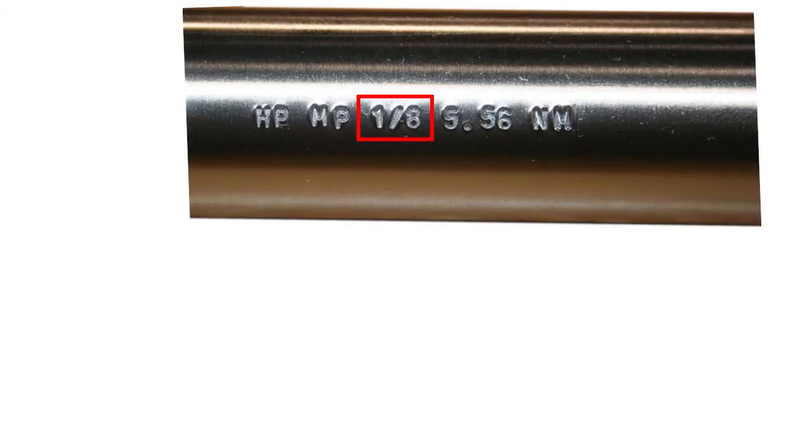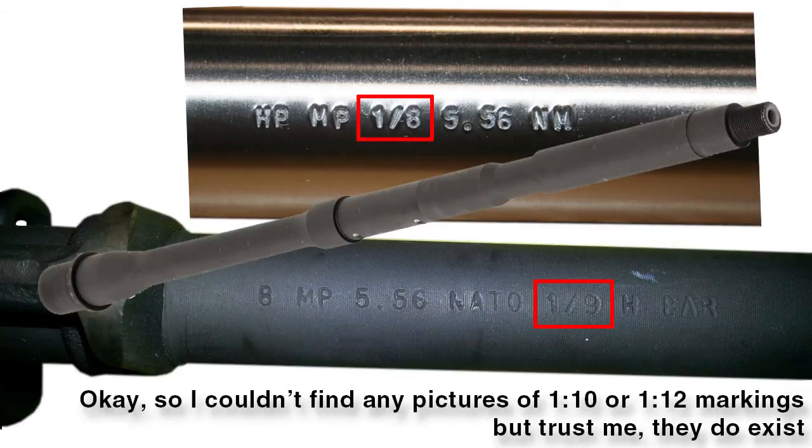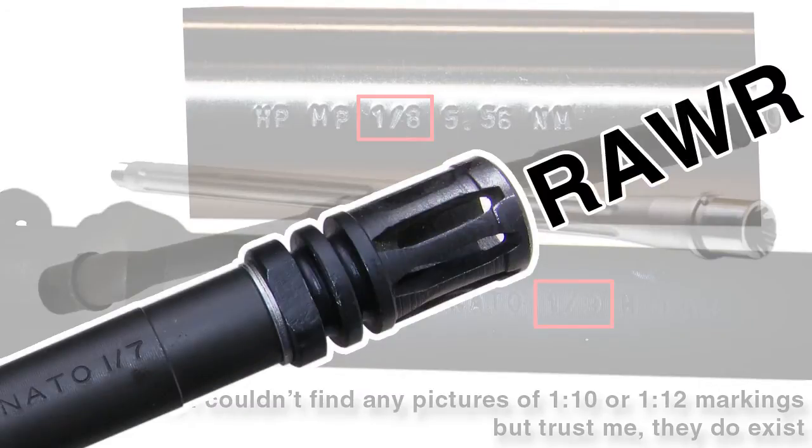Common AR-15 barrels also come in 1 in 8, 1 in 9, 1 in 10, and 1 in 12. The lower the number, the more aggressive the spin.